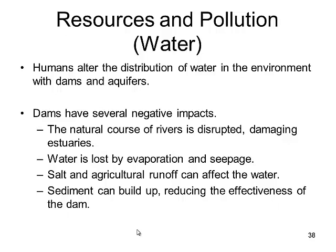Humans alter the distribution of water in environments with things like dams and aquifers, changing levels in lakes to suit our fancies. Dams have several negative impacts on an ecosystem. The natural course of rivers is disrupted, which damages estuaries — those places between the flow of a river into an ocean. Water is also lost by evaporation and seepage, because tumbling water over a dam increases the evaporation rate.